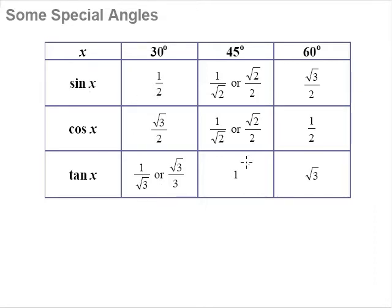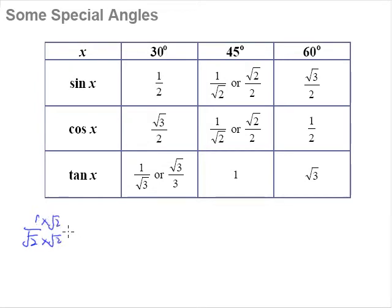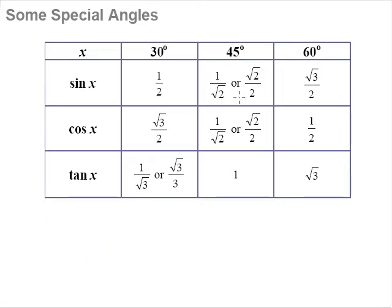Let's take a look at some relationships here. You may notice that there are two answers for sine 45 degrees. Well, they are actually not two answers — they are the same. If you press a calculator, you realize they have the same value of 0.707. This is because of rationalization. If you rationalize 1 over square root 2, you multiply by root 2 over root 2 on both numerator and denominator, and you get root 2 over 2.